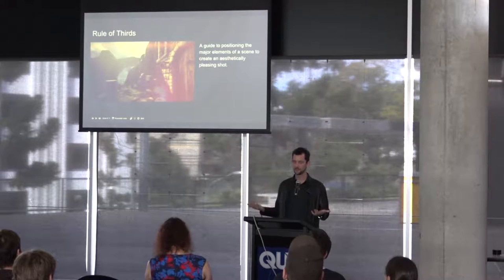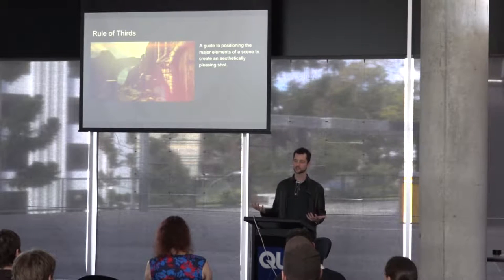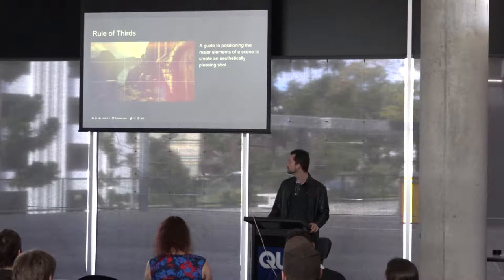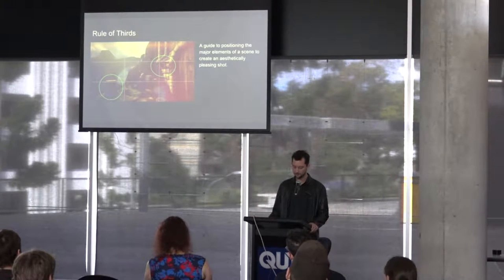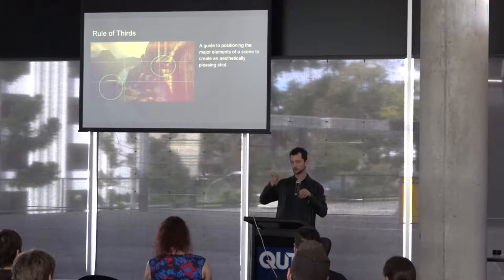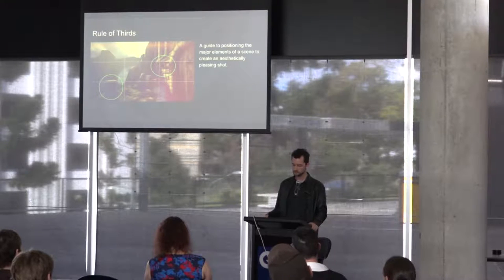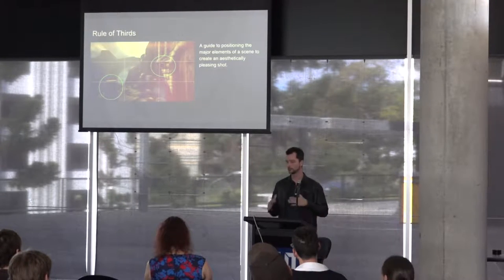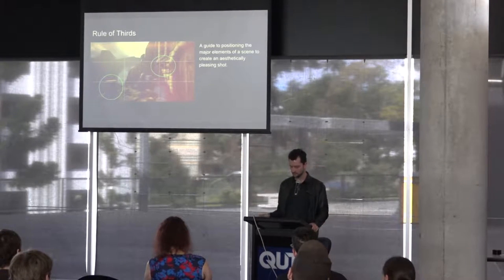Rule of thirds is a very fundamental rule used in photography. It's about composing and balancing a scene so it looks nice, usually by having things off to the side. If you imagine the scene divided up by third lines, the idea is to place objects roughly either on the lines or at the intersections to create a balanced scene. In my game I have a fixed camera, so I've tried to compose each shot as you first enter a room so the major puzzles and focal points fall on these lines.